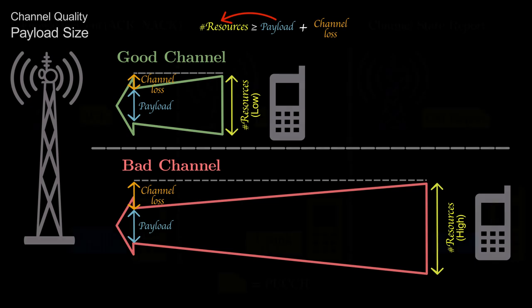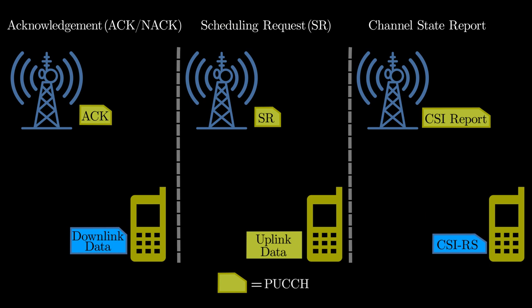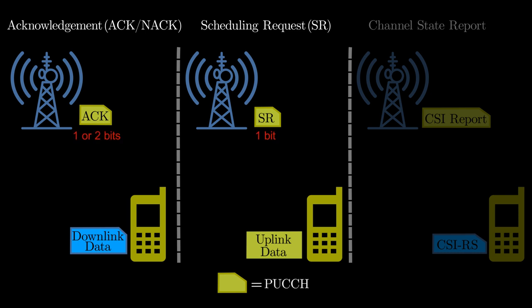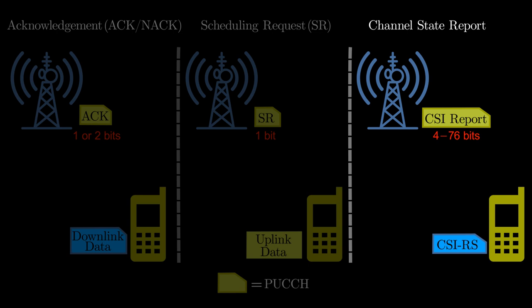Remember that PUCCH can contain acknowledgement, scheduling request, and channel state report. Out of these, both acknowledgement and scheduling request need only less number of bits, but channel state report needs more number of bits.